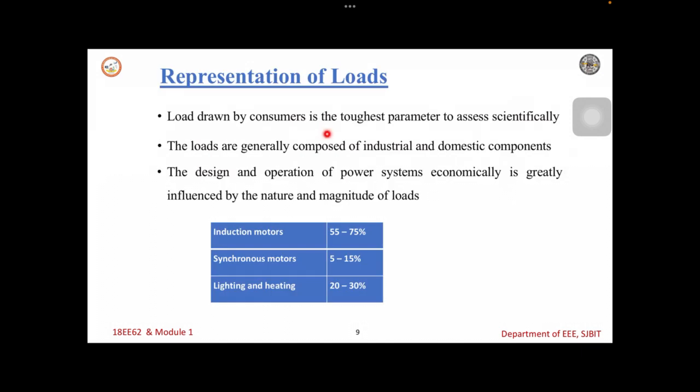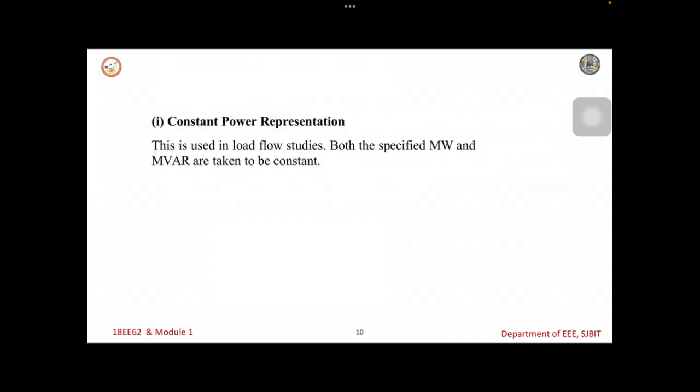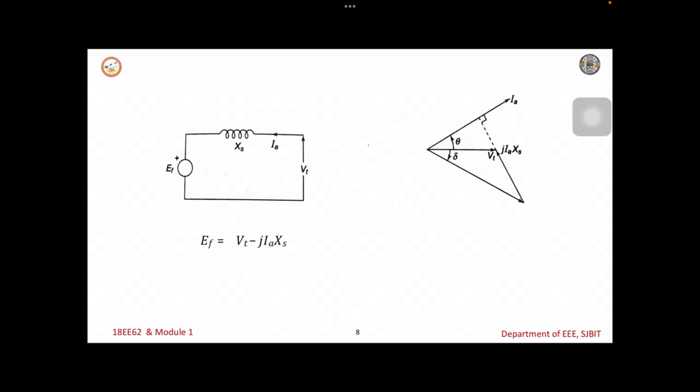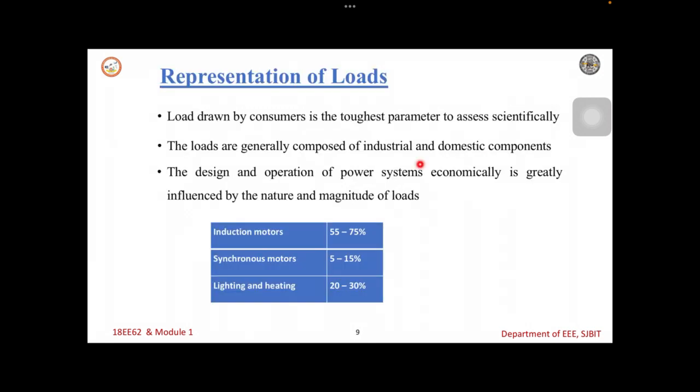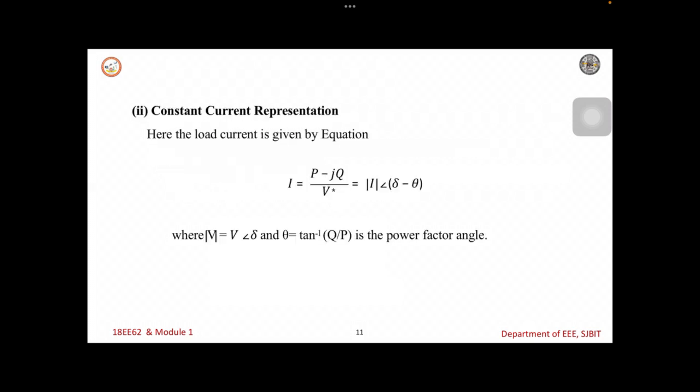The loads are generally composed of various types - domestic, industrial and commercial loads. The design and operation of the power system economically is greatly influenced by the nature and magnitude of loads. From the practical observation, it is done that the inductive loads are more on the grid. That is 55 to 75 percent of the loads are of inductive in nature. Synchronous motors are 5 to 15 percent. Light and heating loads are 30 percent.